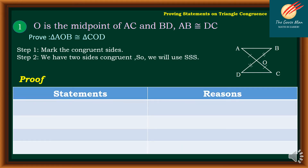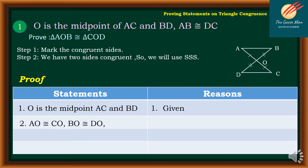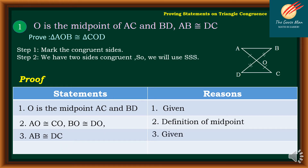For step number three, we will write our proof with statements and reasons. Statement one: O is the midpoint of AC and BD — reason: given. Statement two: AO is congruent to CO, and BO is congruent to DO — reason: definition of midpoint. Statement three: AB is congruent to DC — reason: given. Statement four: triangle AOB is congruent to triangle COD — reason: side-side-side congruence postulate.